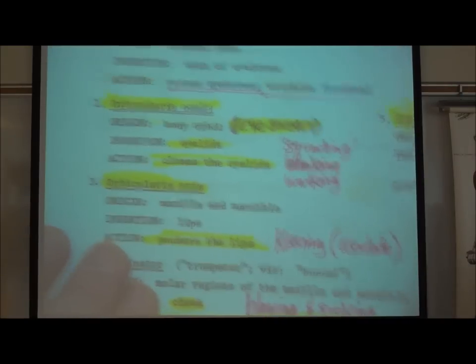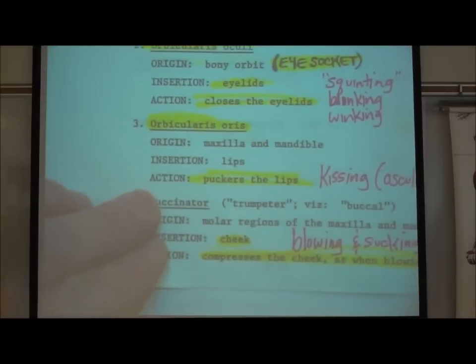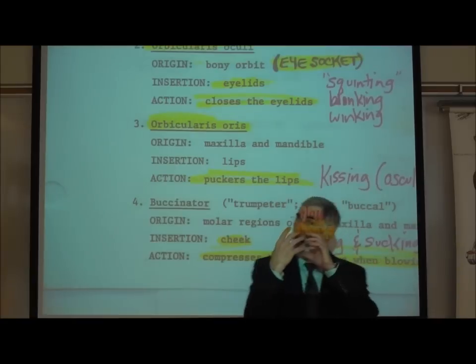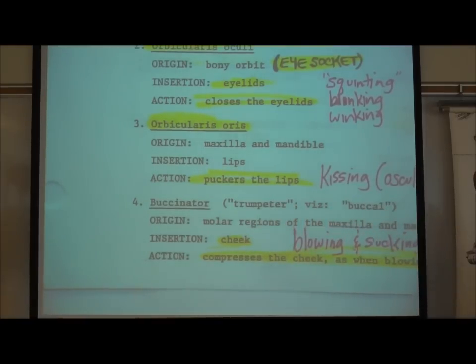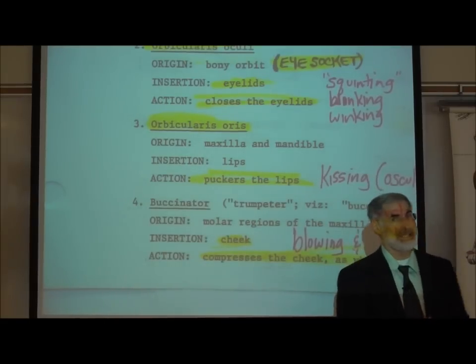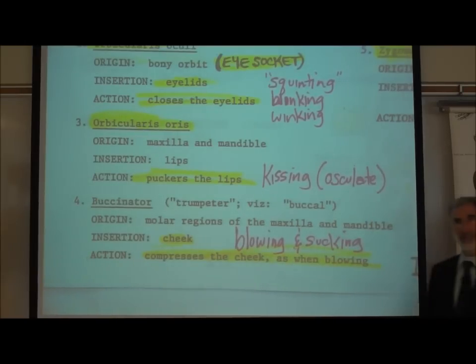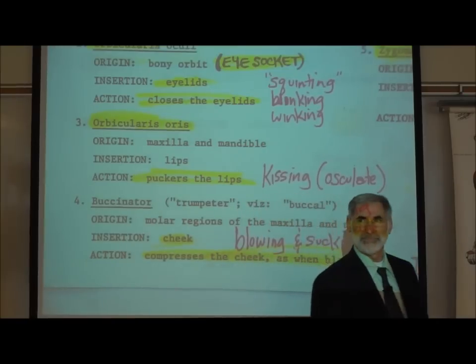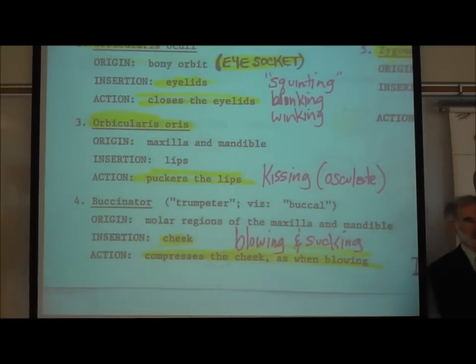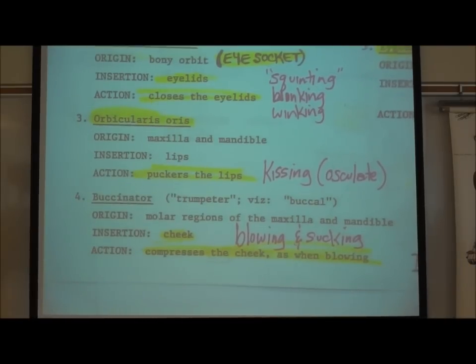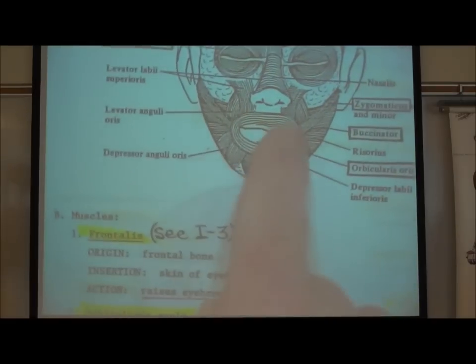A third muscle is the orbicularis oris. It is circular in shape. Oral means mouth. It originates around the mouth on the maxilla and the mandible, and it inserts on the lips. It puckers the lips, so it's used for kissing. The orbicularis oris is the kissing muscle. Incidentally, another name for kissing is osculate — it's an English word meaning to kiss.